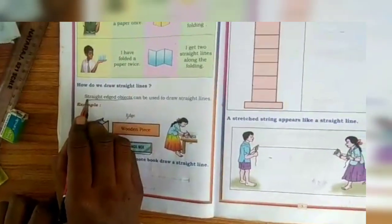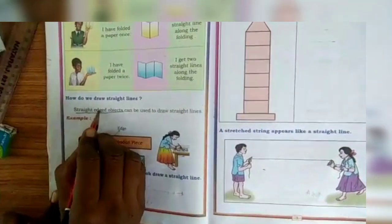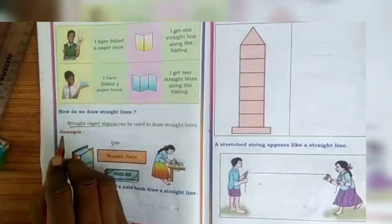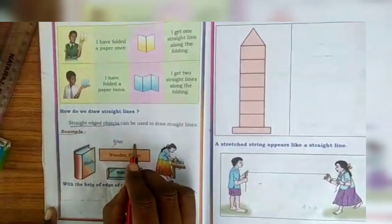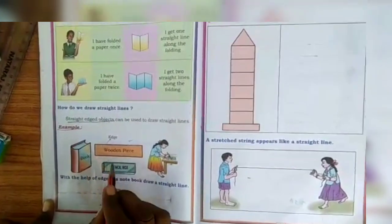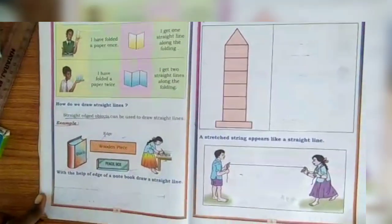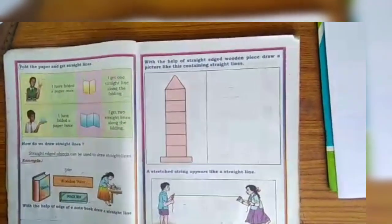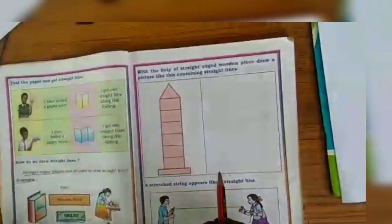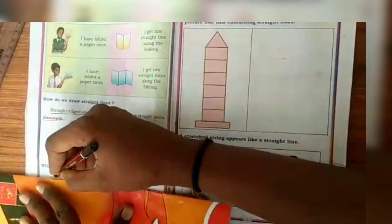Next, straight edge object examples. For example, wooden piece, book, pencil box. Next, you can take one small book and draw one straight line.